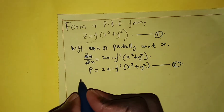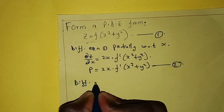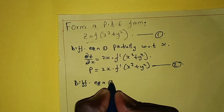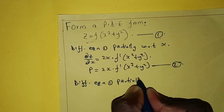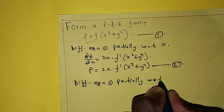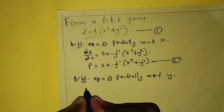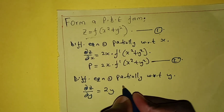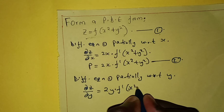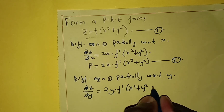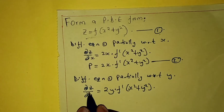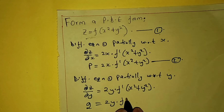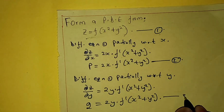Next step, we differentiate equation number one partially with respect to y. We'll have partial z over partial y equals 2y times f prime of x squared plus y squared. Since partial z over partial y is the same as q, q equals 2y times x squared plus y squared f prime. We call this equation number three.